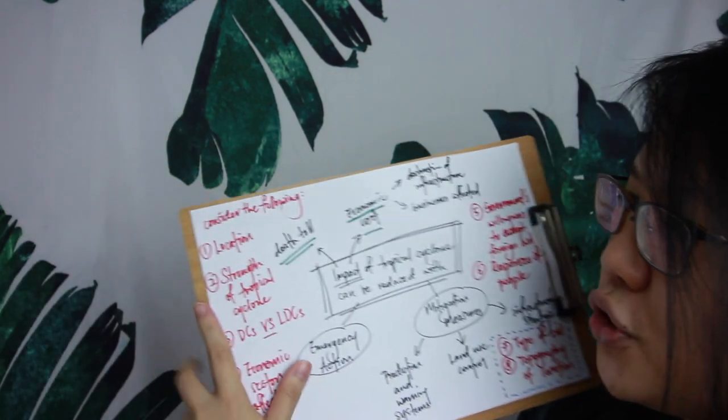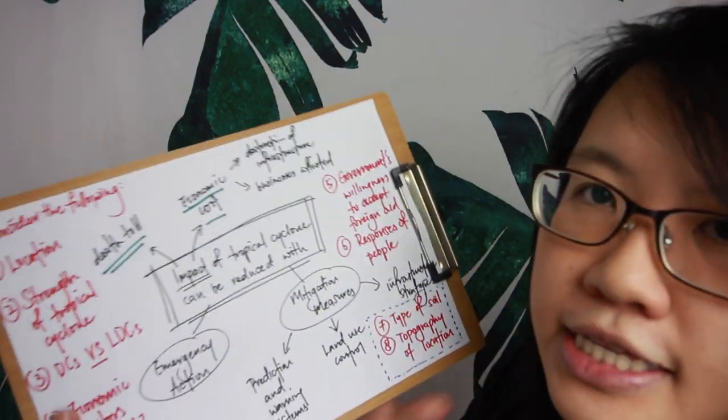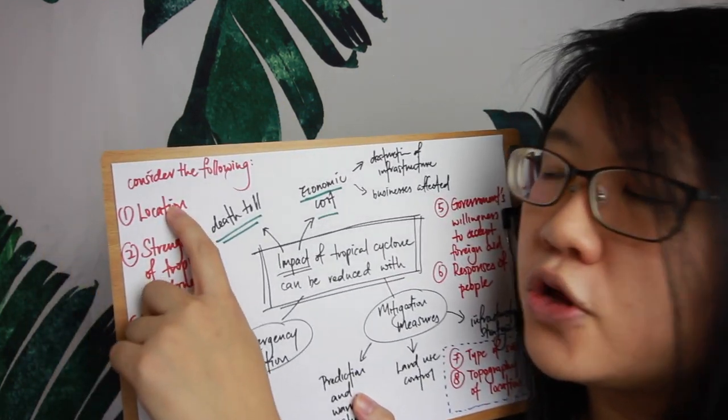When explaining impacts in examinations, consider location first — whether it's a coastal or inland area. Coastal environments are vulnerable to all three: strong winds, storm surges, and torrential rain. Inland areas are vulnerable to storm surges and torrential rain, but not so much strong winds, since tropical cyclones dissipate when moving over land and away from the warm ocean waters that fuel them.